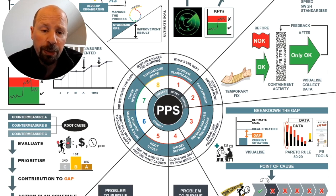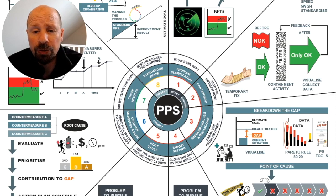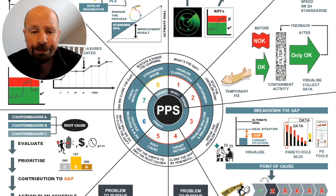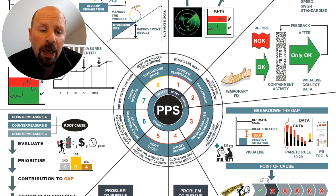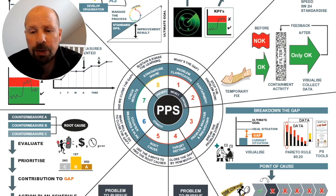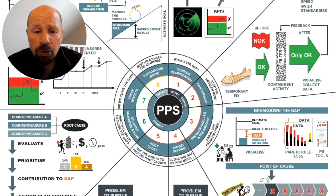Remove the containment once effective countermeasures from step six are in place. Remember, the key point of containment is to stop the problem flowing out to the customer immediately and also help with pressure on management to solve the problem.